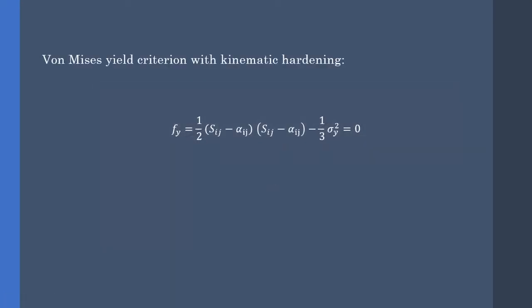For kinematic hardening, the equation is transformed into the following, in which the sigma y is the exact yield stress derived from the tensile test, also called the virgin yield stress.